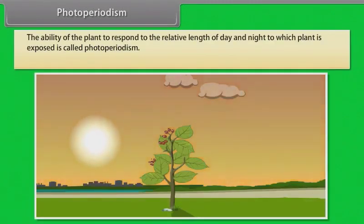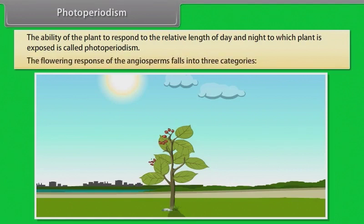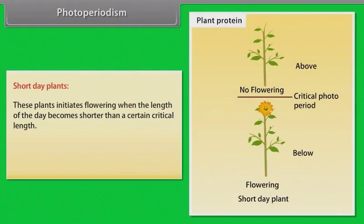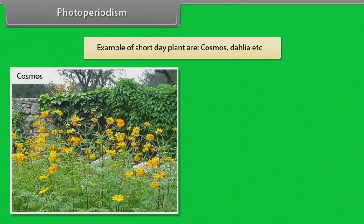Photoperiodism: The ability of plants to respond to the relative length of day and night to which the plant is exposed is called photoperiodism. The flowering response of angiosperms falls into three categories. Short day plants: These plants initiate flowering when the length of the day becomes shorter than a certain critical length. If these plants are exposed for a length greater than the critical length, they will remain vegetative. Examples of short day plants are Cosmos, Dahlia, etc.